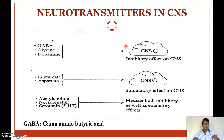Before going to the mechanism of action of sedatives and hypnotics, let us see what the different neurotransmitters present in the CNS are. There are two types: inhibitory neurotransmitters and stimulatory neurotransmitters.